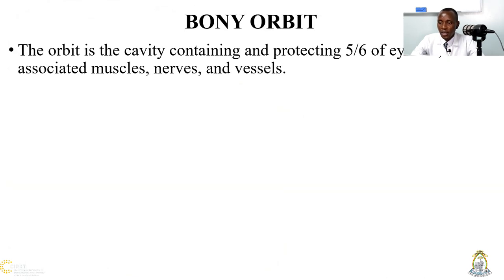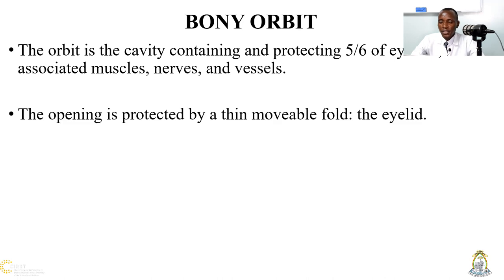The Bony Orbit is a cavity containing and protecting five-sixths of the eyeball. The associated muscles, especially the extraocular muscles, the nerves, vessels, and other accessory structures of the eye. The opening is protected by a thin oval fold, the eyelid. The eyelid and other accessory structures of the eye — we shall talk about it in the next lecture.